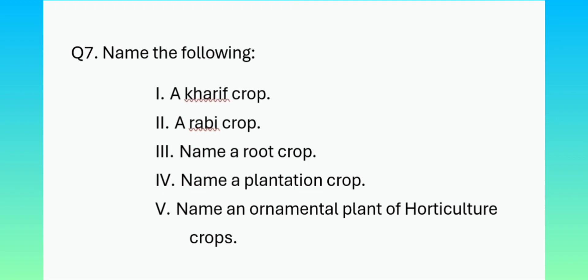The last question in this paper is again 'name the following.' In this section, it is mostly in the form of an example: one is a kharif crop, then a rabi crop, then the name of a root crop, then a plantation crop, and the final one is an ornamental plant of horticulture crops. Just one answer each would fetch you one mark against it.